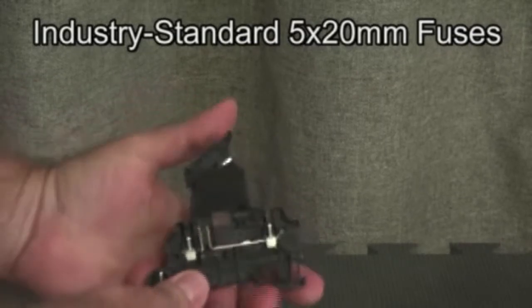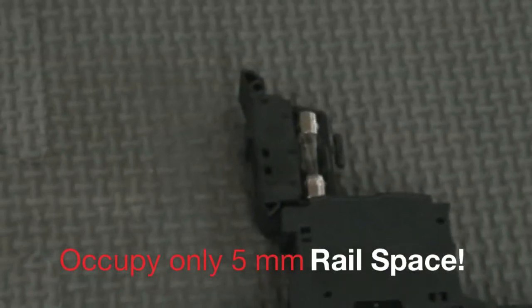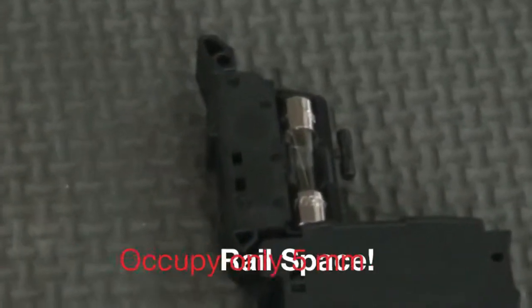However, as long as the fuse blocks are separated by one or more non-fuse blocks, they occupy only 5 millimeters of rail space.